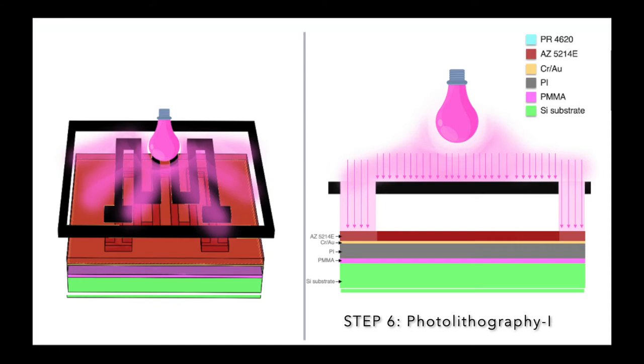This exposure process selectively weakens the positive photoresist. The duration of the UV exposure is calculated from the incident light intensity and the recommended energy dose from the photoresist vendor.